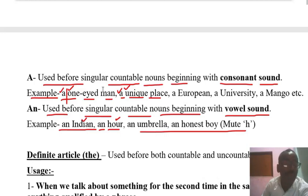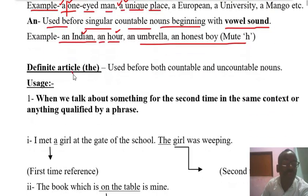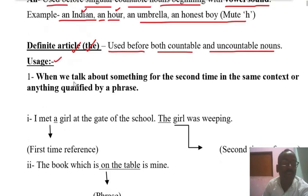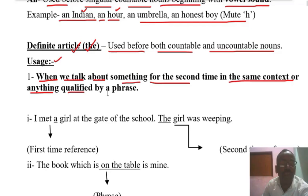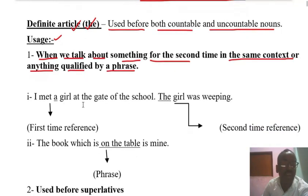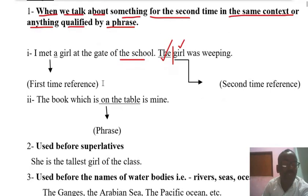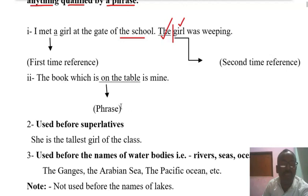The Definite Article The is used before both countable and uncountable nouns. We use The when we talk about something for the second time in the same context, or when it is qualified by a phrase. For example: 'I met a girl at the gate of the school — the girl...' Here, girl is referred to again, so we use The. Another example: 'The book which is on the table is mine' — qualified by a phrase.